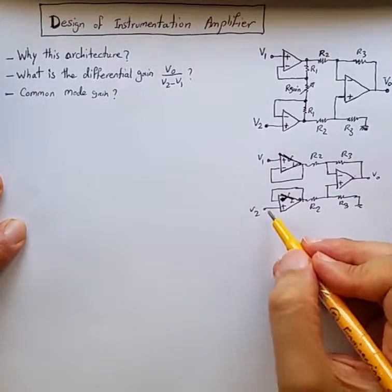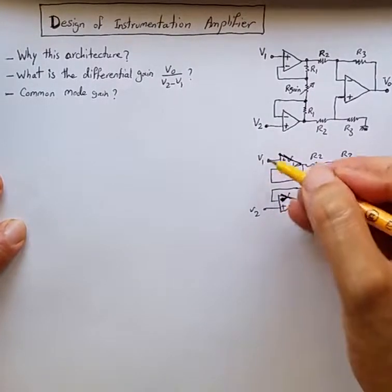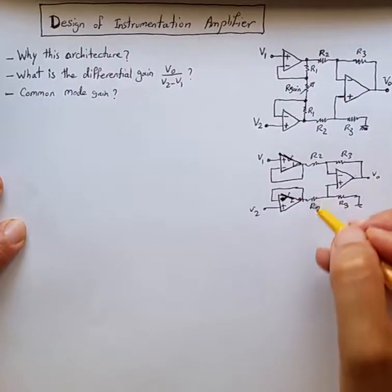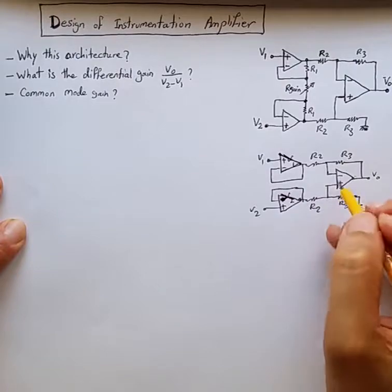This way the input impedance that each of these voltages is observing is infinite and then they can drive the actual differential amplifier.